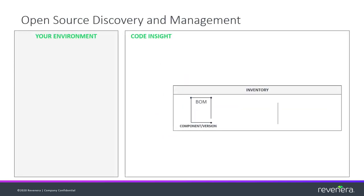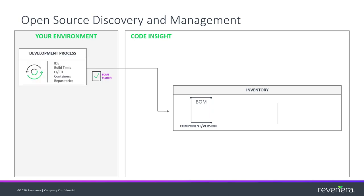Now let's talk about how Code Insight can be used to create and manage the bill of materials. One of the main goals of an SCA solution is to first create that BOM, and then based on this list, provide information that will allow users to understand any possible consequences for what they have within their application. One way Code Insight can create this bill of materials is via our remote scan agents that integrate into the systems and tools that the engineering team is already using, such as IDEs or CI systems like Jenkins. A remote scan agent will download a scanner to the system where the code will be scanned, and the results will be supplied to Code Insight for review. This method is all about the automated analysis we spoke of earlier.